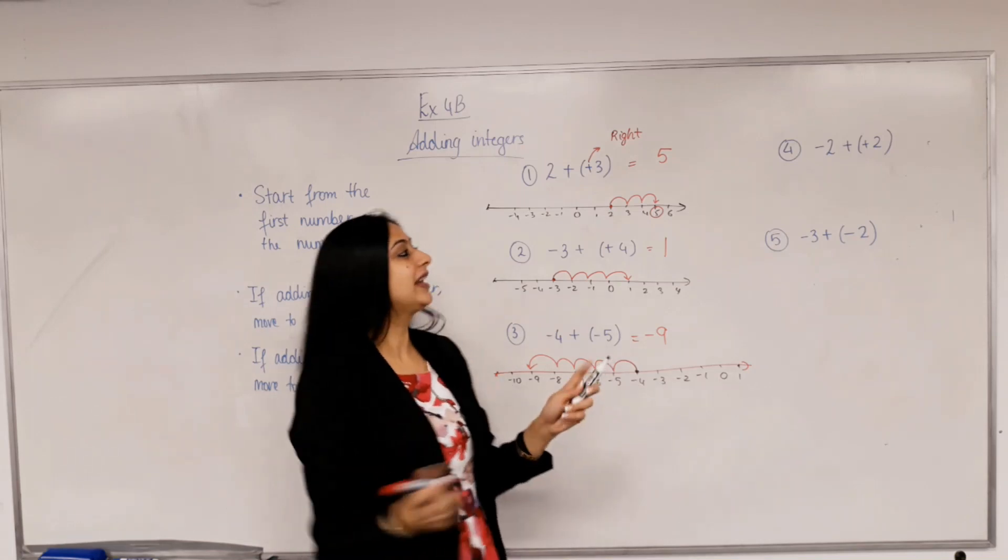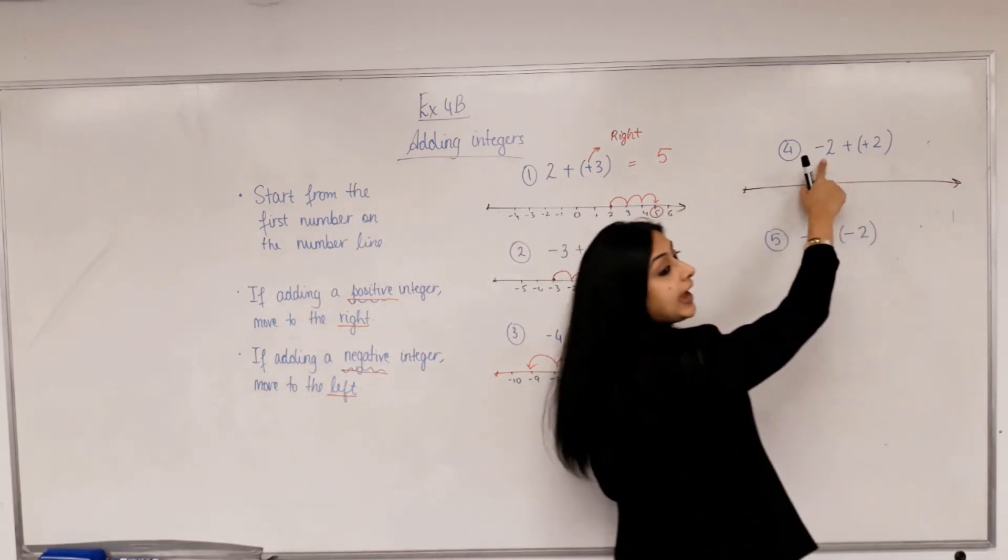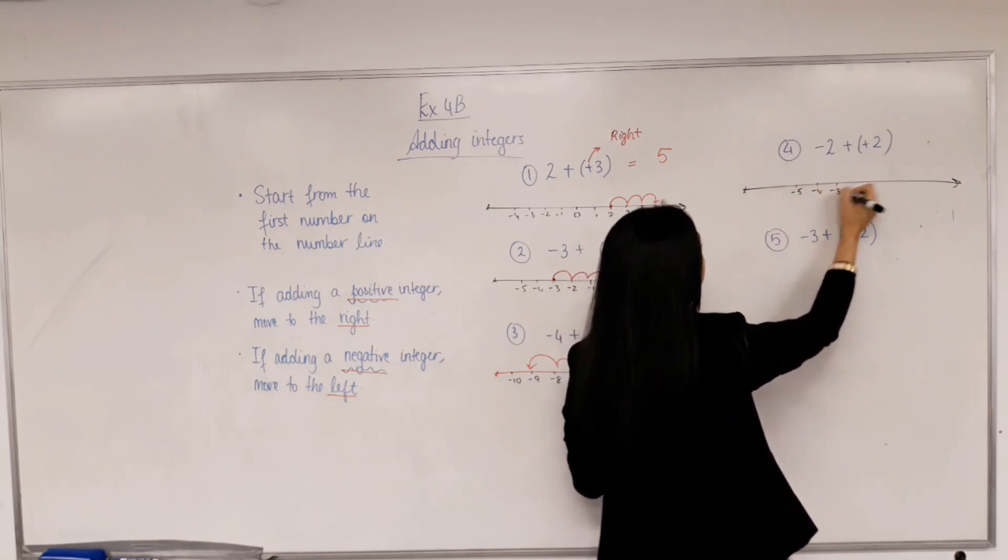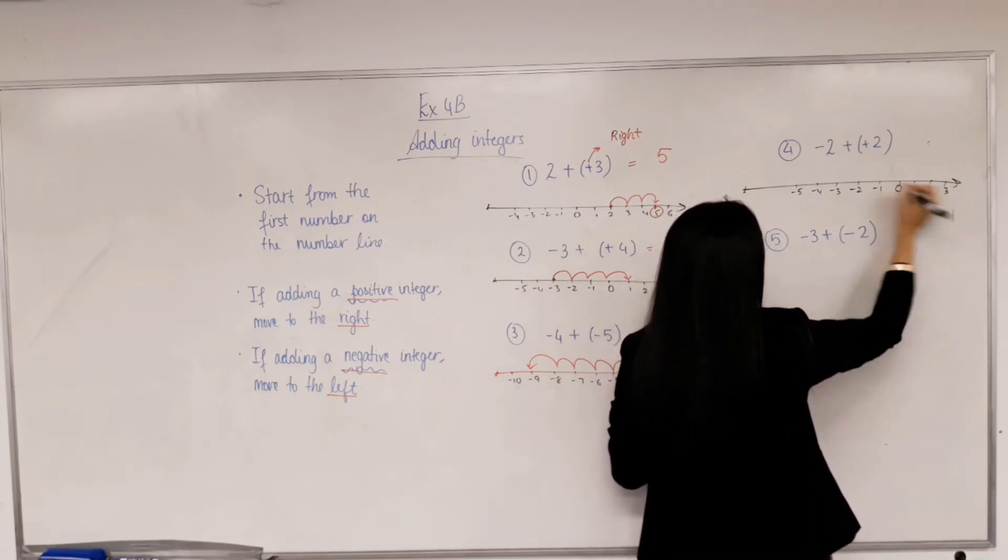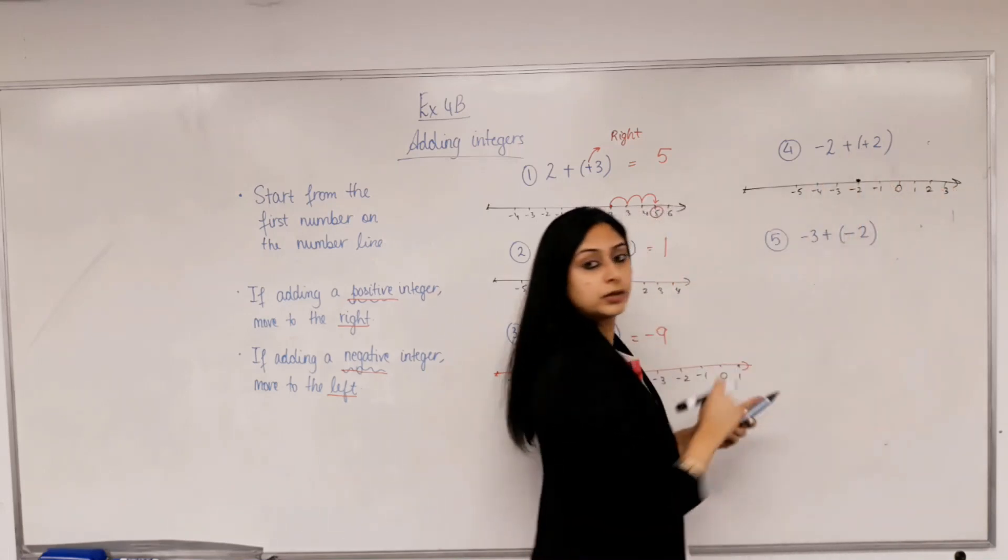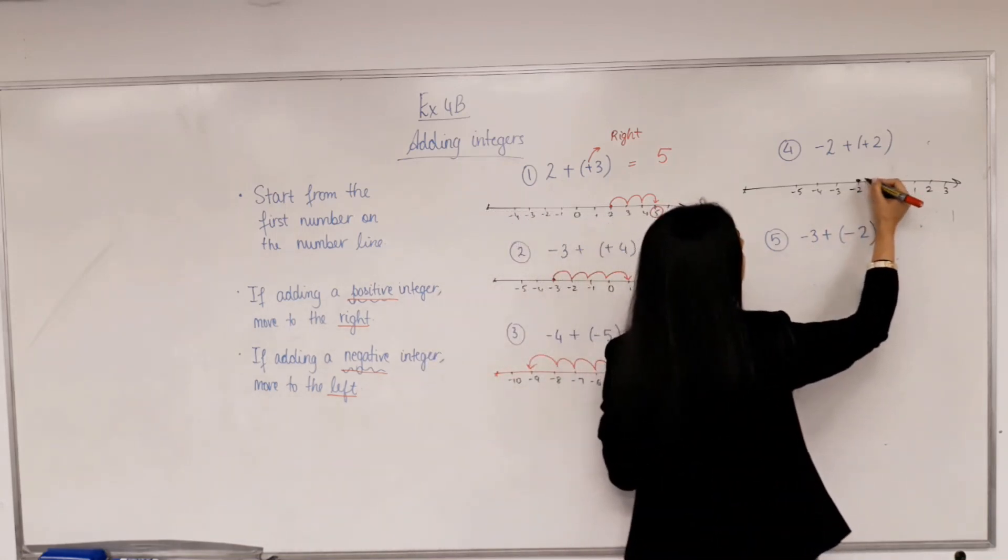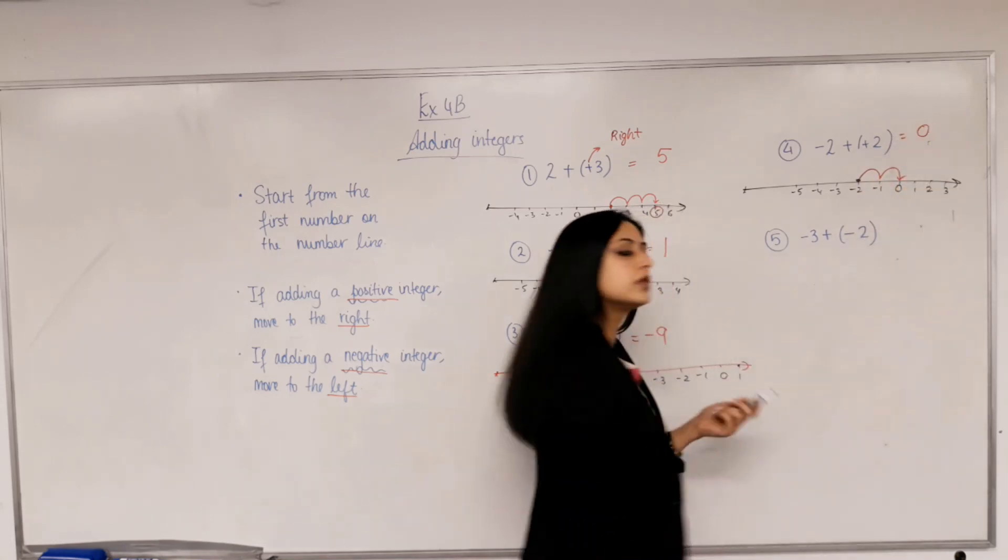Okay? All right, next one. Starting at? Starting at? Negative 2. I'm adding a positive integer. So I'm moving to the? Right. 1, 2. What's the answer? Zero.